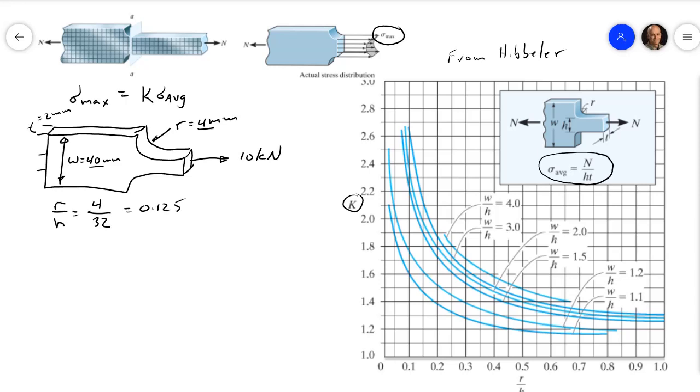While we're at it, we can get W over H, so that's 40 over 32 equals 1.25.